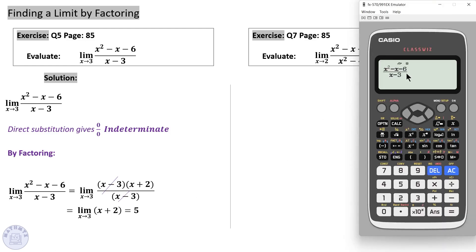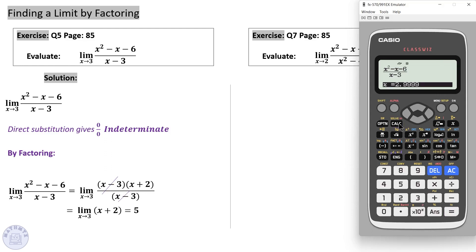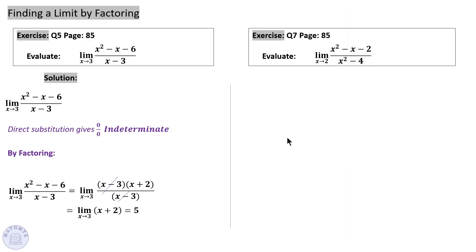You can check your answer by numerical approximation — write the expression, click calculate, and approach 3 from the left side with 2.9999, which approaches 5. From the right side, try 3.0001, which also approaches 5.